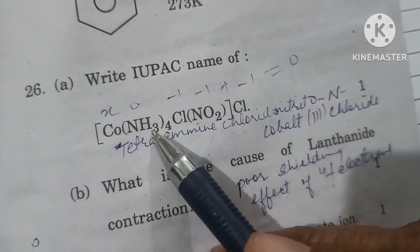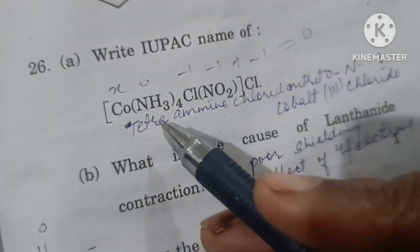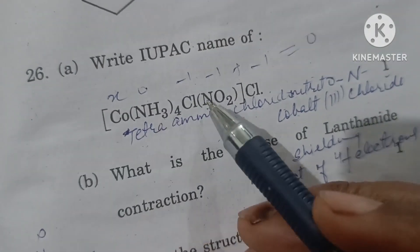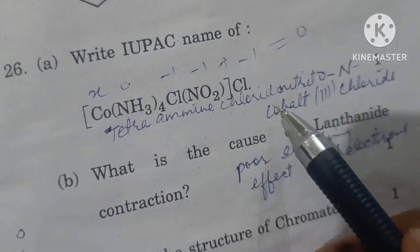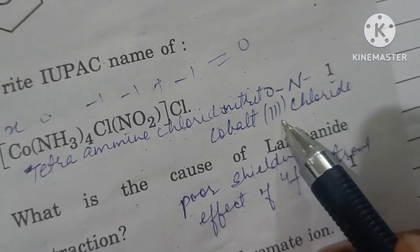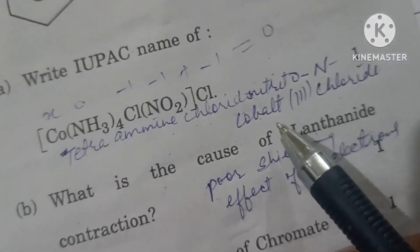Write the IUPAC name of this compound. This will be tetraamine chlorido nitrito-N cobalt, oxidation state comes out to be 3, chloride.